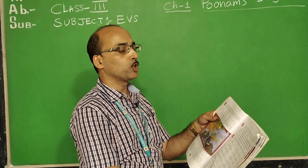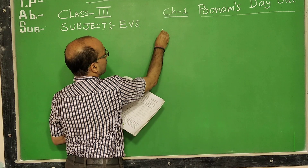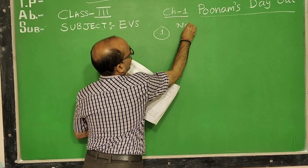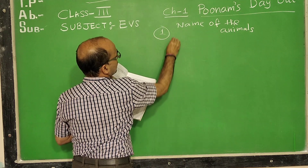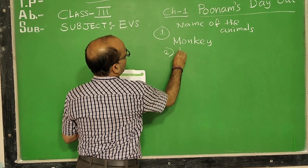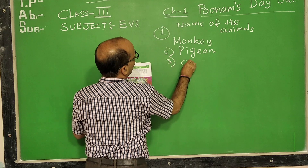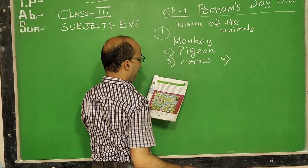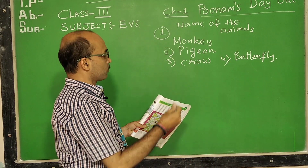Then Poonam looked up and saw some animals on the tree. 'Which animals can you spot on the tree in the picture? Write down their names.' You must see the picture and write down the names. Some of the animals I am writing here: number one, monkey; number two, pigeon; number three, crow; number four, butterfly, and so on. You write all the names there.